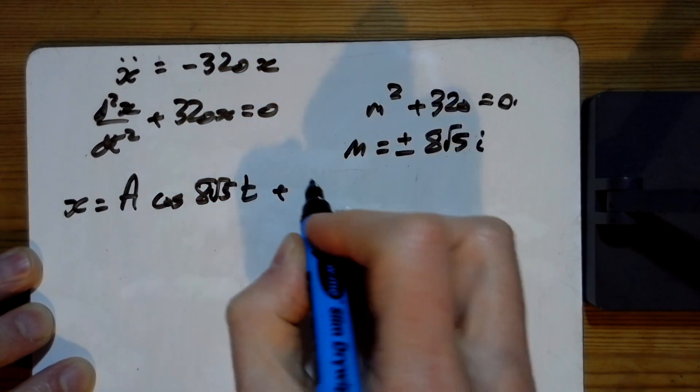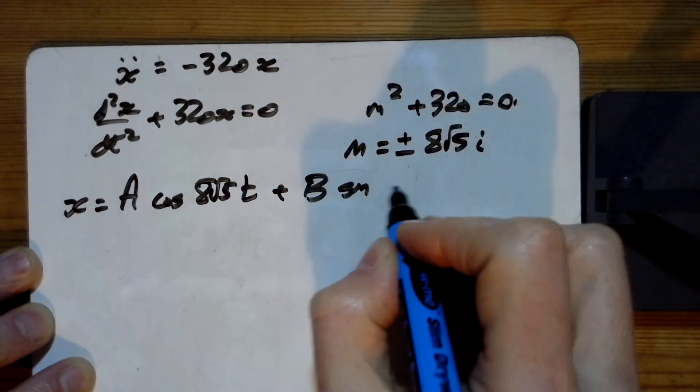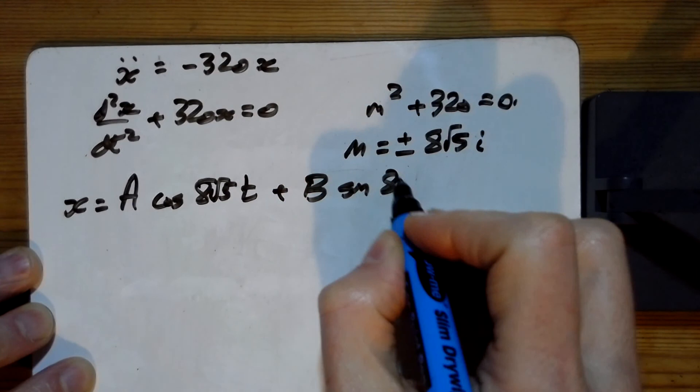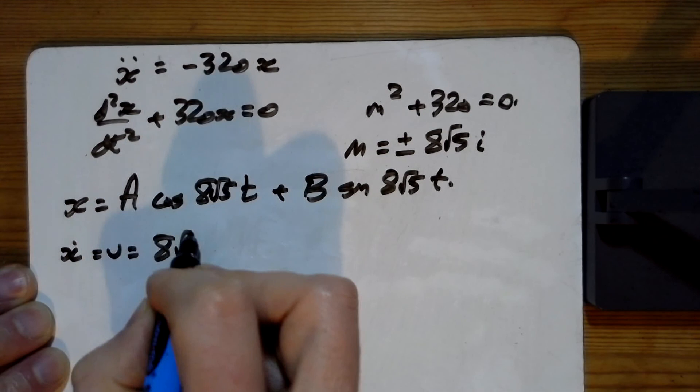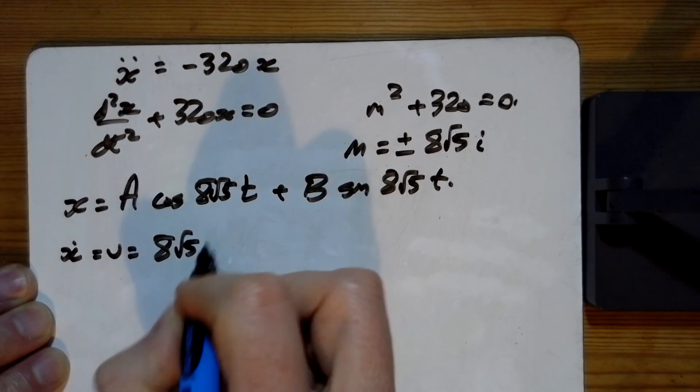5t plus B sin 8√5t. Differentiating it, because we'll probably need to, gives us -8√5A